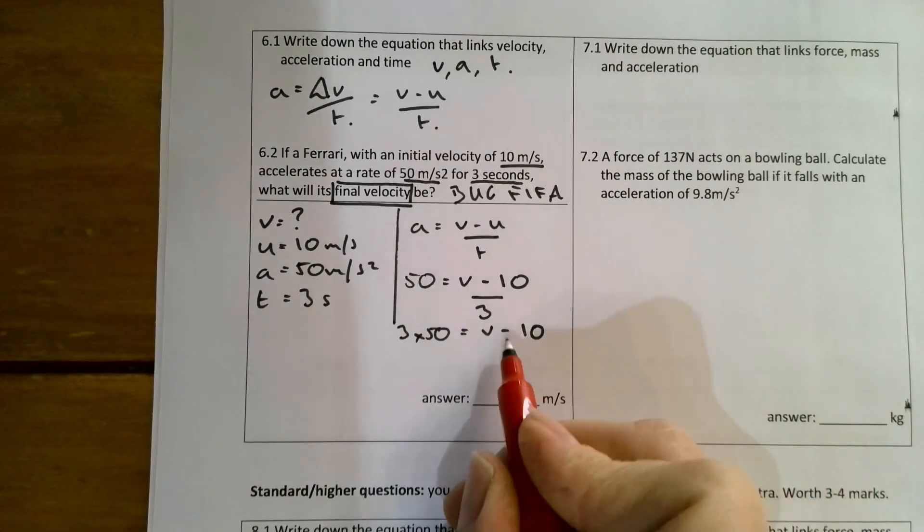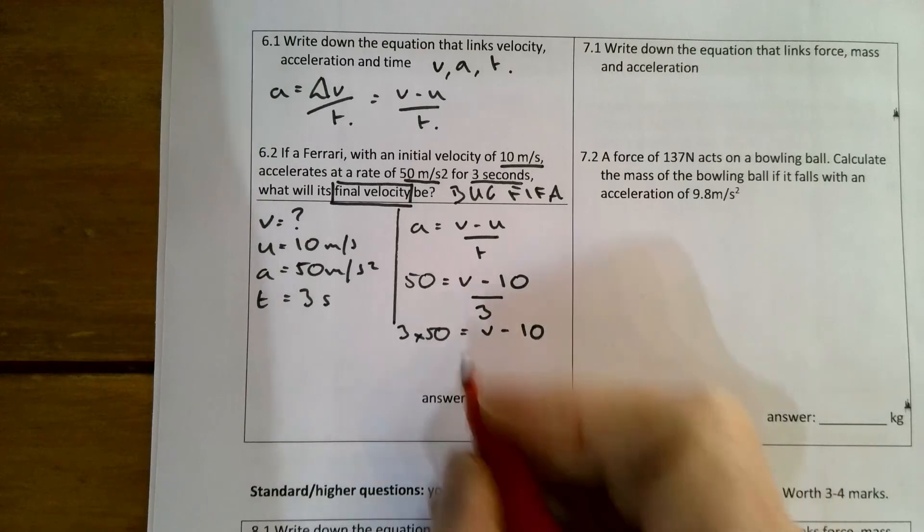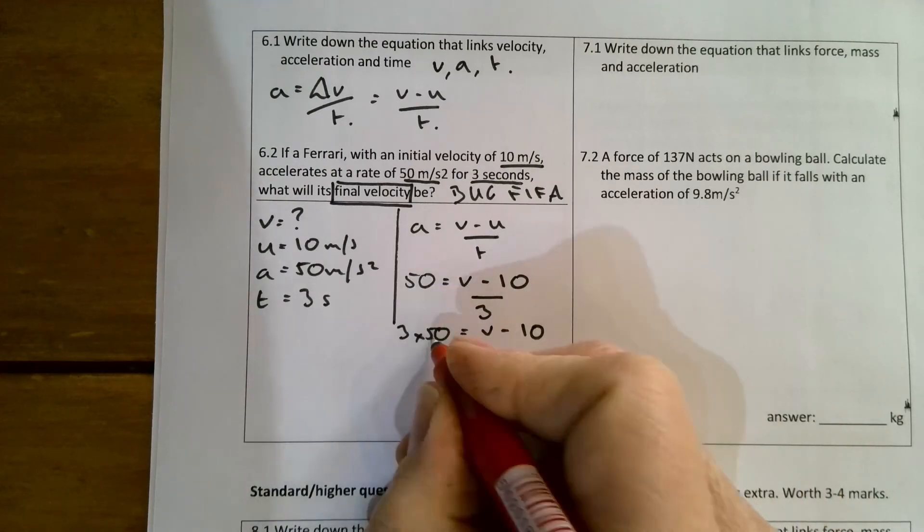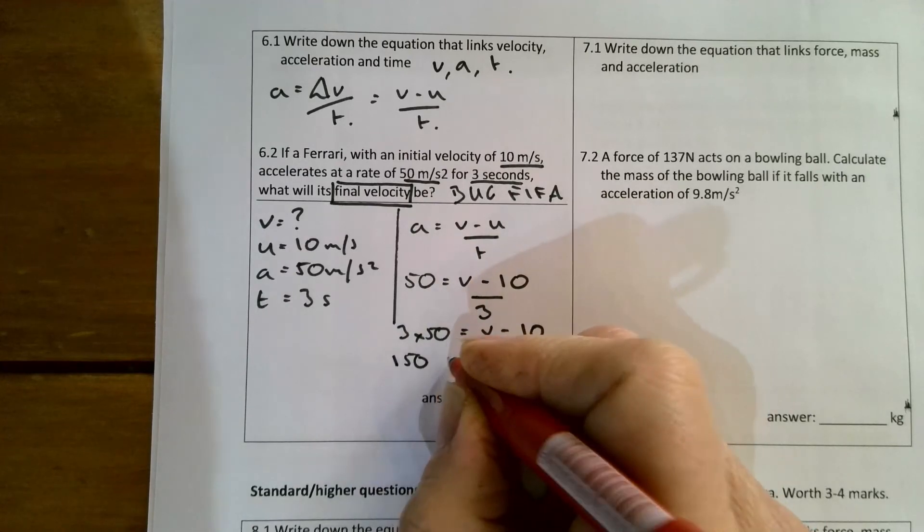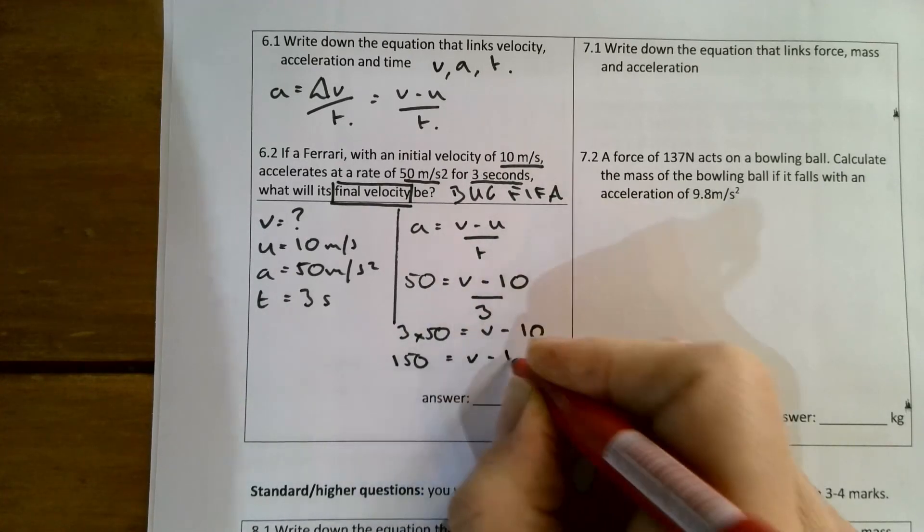What I can now do is move that to the other side. 3 times 50, so that's 150, and that equals v minus 10.